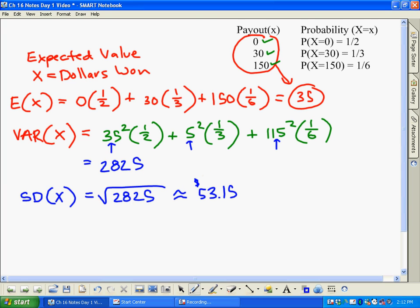So we call this the standard deviation. So once again, that's our expected value, that's what we're going to win on average, and this is how much variability we have. Typically you're going to be within about $53 of that, so it's a pretty big range of variability here.